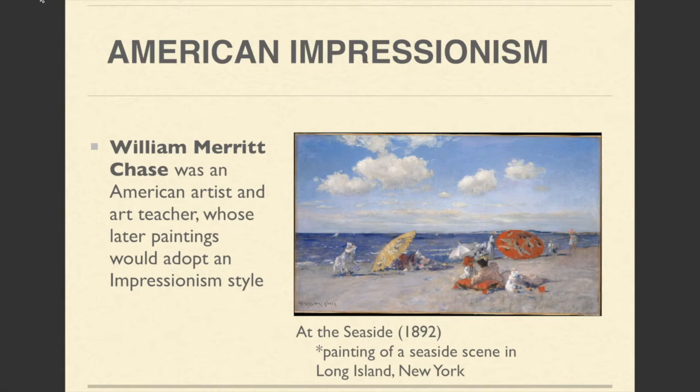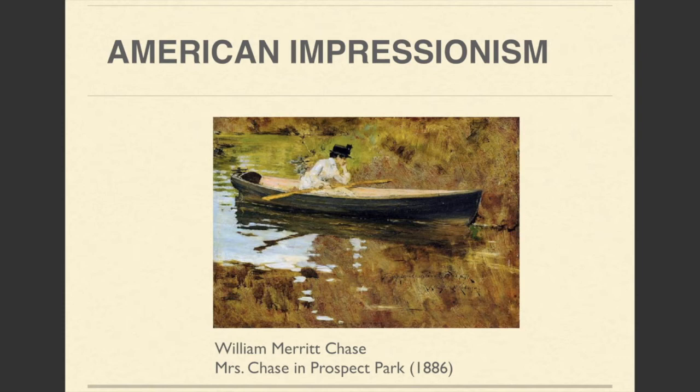One of the key artists in the American movement was William Merritt Chase. He was an American artist and also an art teacher, and his later paintings would adopt an Impressionist style. When you look at this picture to the right — at the seaside — you can consider how it's a little different than some of the paintings we had looked at before. One of the differences is that there's a little bit less use of optical color mixing, and the marks are a little bit more blended into each other.